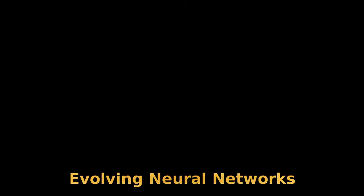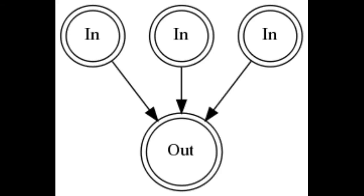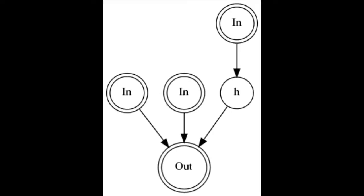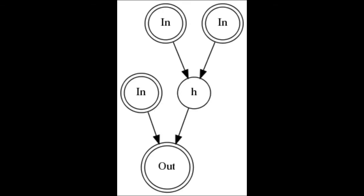One means of doing this is to evolve the topology of a neural network. We can start with a simple network with just inputs and outputs. We then evolve the topology to add hidden nodes, switch connections, and modify connection weights. This allows the network to become more complex and solve more complex problems.